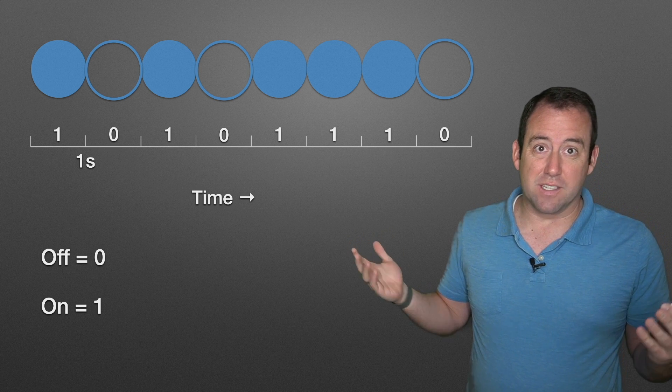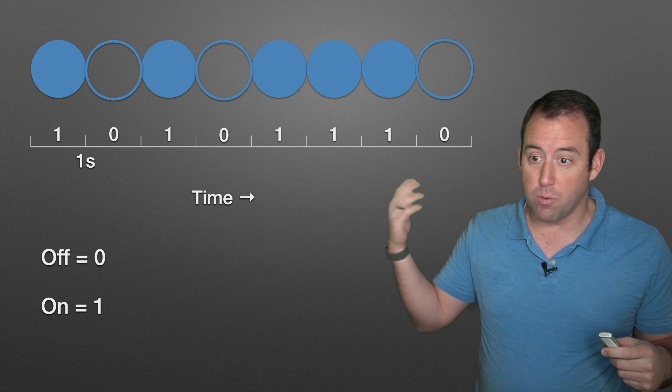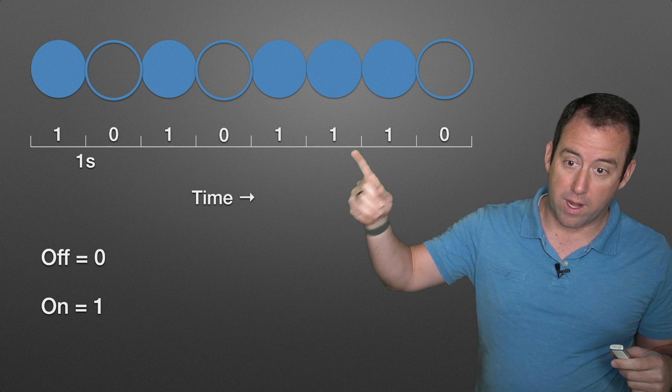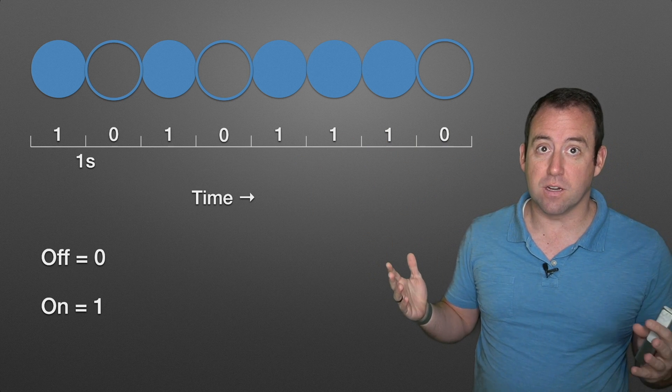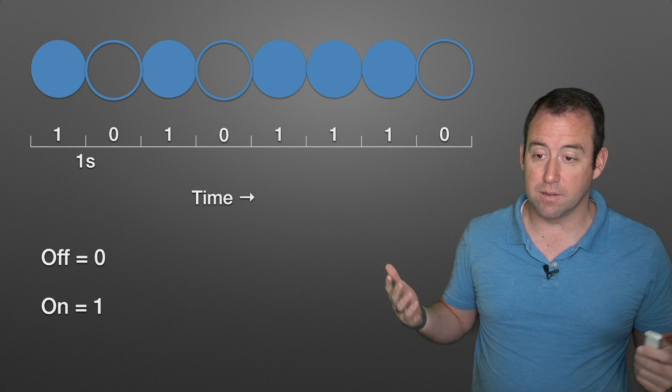Let's say, for example, that we wanted to send this signal. This is one byte of binary, one, zero, one, zero, one, one, one, zero. That is our signal. How are we going to send that? What's it going to look like?